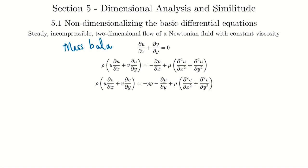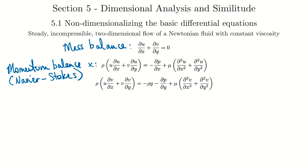At the top is the mass balance after all approximations are applied; below that is the momentum balance — a further simplified form of the Navier-Stokes equations, with x and y components. These equations are used for point-by-point information of the flow. The three variables are u, v, and p — velocity components and pressure at each location. Solving them requires applying boundary conditions and standard PDE solution methods.